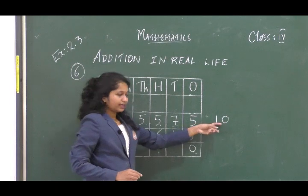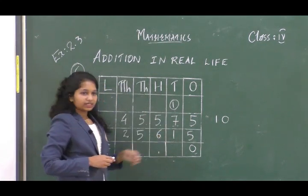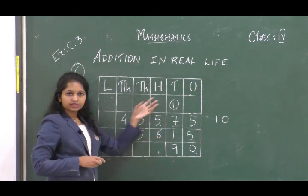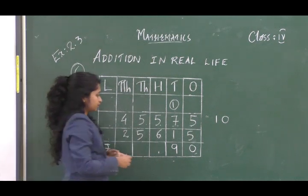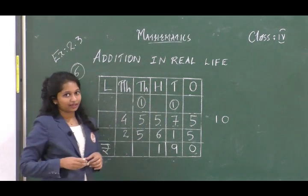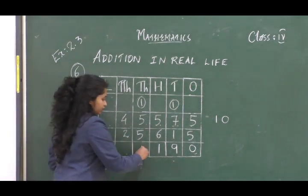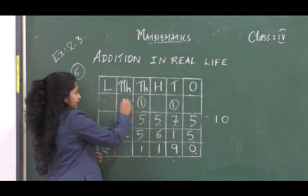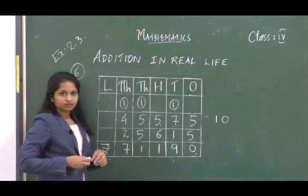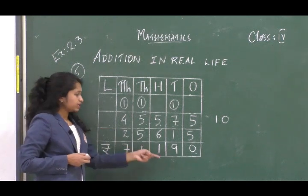Write 0 in the ones place and carry 1 to the tens place. Adding all tens place values gives 9 with no carry. In the hundreds place, 5 plus 6 is 11 — write 1 here and carry 1 to the thousands place. Adding all thousands place values gives 11 again — write 1 in thousands place and carry 1 to the ten thousands place. Adding all ten thousands place values gives 7. So the total amount spent on the TV and refrigerator is rupees 71,190.